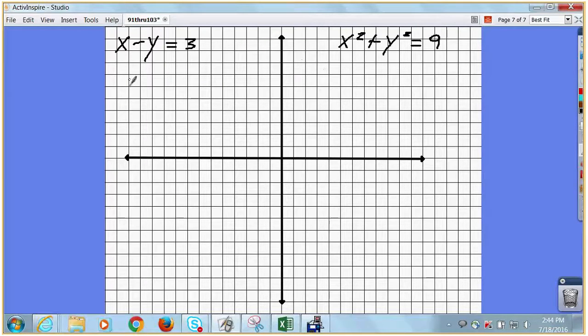Or I'm gonna show you a different way. Negative y equals negative x plus 3, so y equals x minus 3. There's one line.